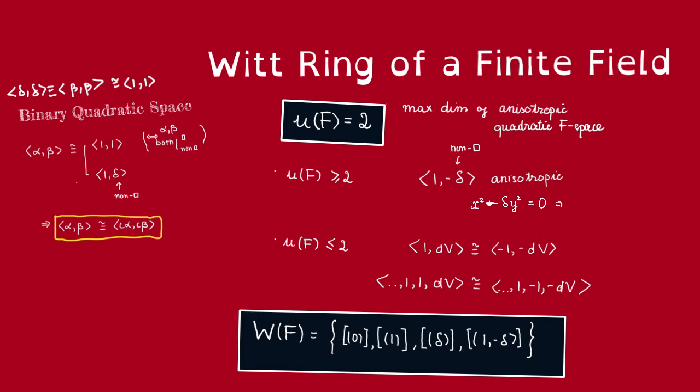This means, in particular, that delta y squared is equal to x squared. If y is not 0, then this would mean that delta itself must be a square. But we say that delta is a non-square, so that's a contradiction. So y must be 0, but then that means x must be 0 also. And thus, if delta is not a square, then this space, 1, minus delta, must be anisotropic. So this u(F) must be at least 2.